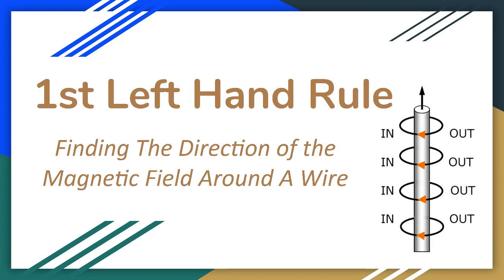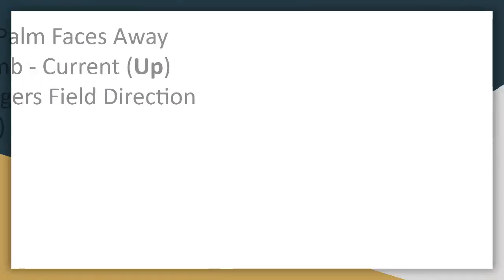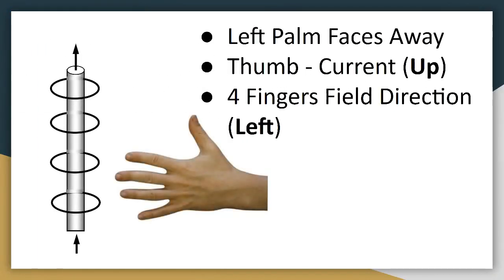Another method for finding the direction of the magnetic field around a wire is a little trick called the first left-hand rule. In this example we see a wire with current going up and its four rings of magnetism. In order to find the direction of the magnetic field in front of the wire, we place our left hand palm away and point our left thumb in the direction of the current. Since our four fingers are now pointing to the left, we now know that the magnetic field in front of the wire points to the left.